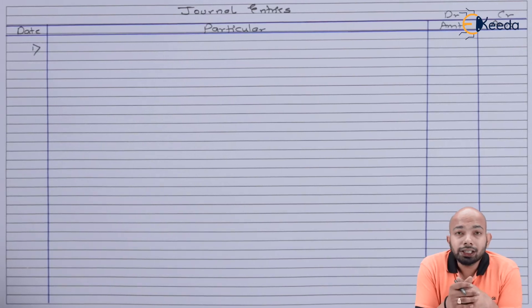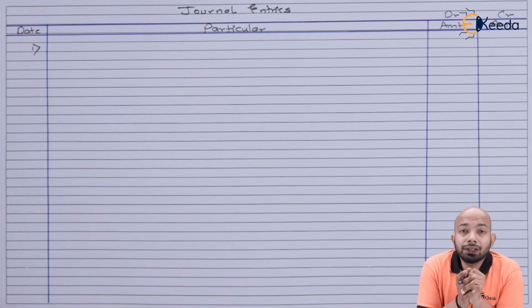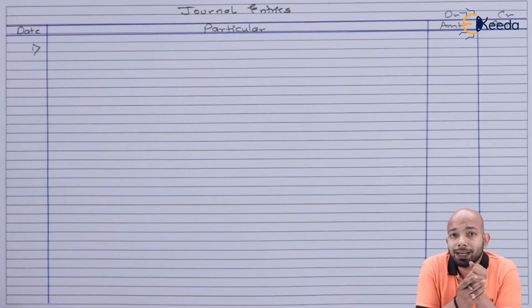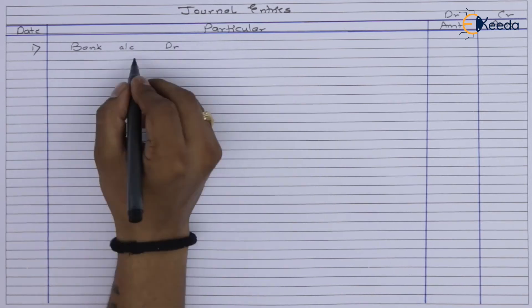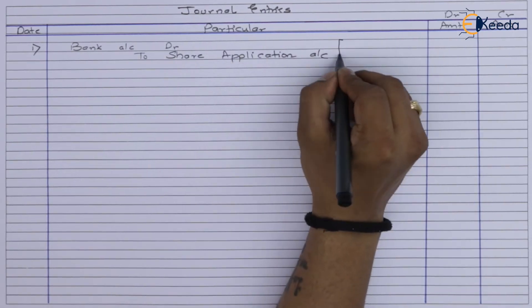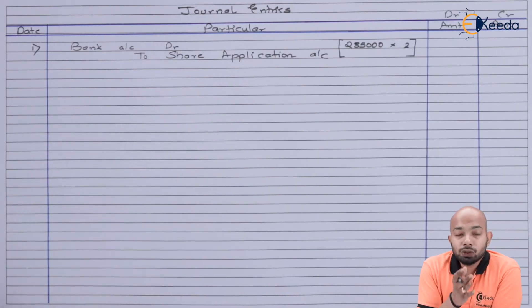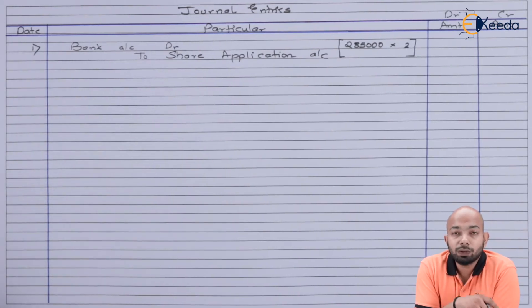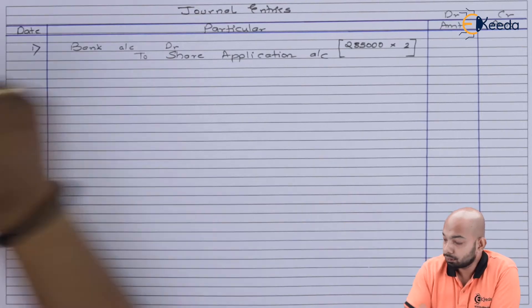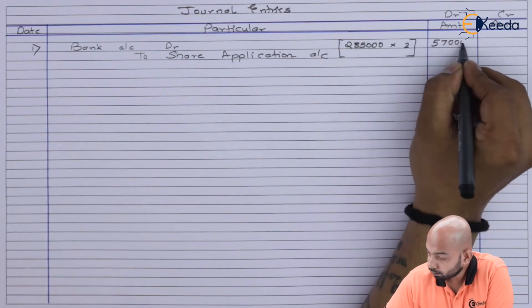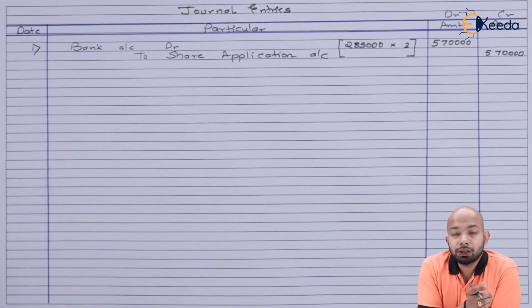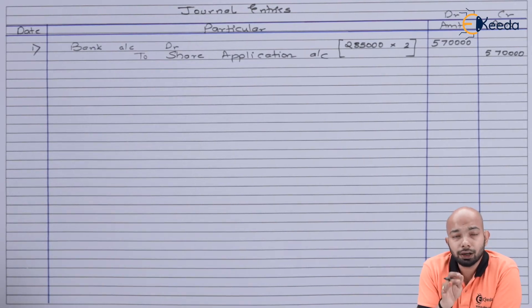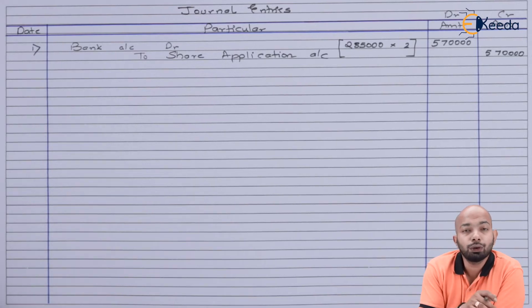While passing journal entries we go in chronological order. First, we received applications for 2,85,000 shares. The entry is: 2,85,000 shares × ₹2 = ₹5,70,000. Out of this, we refunded 35,000 shares × ₹2 = ₹70,000, so let's pass the entry for refund.